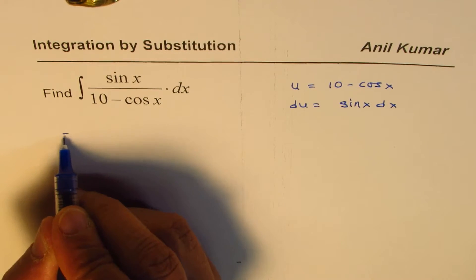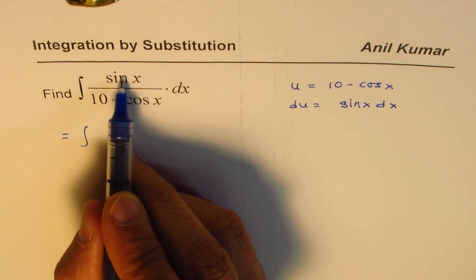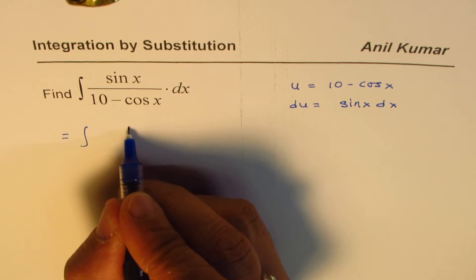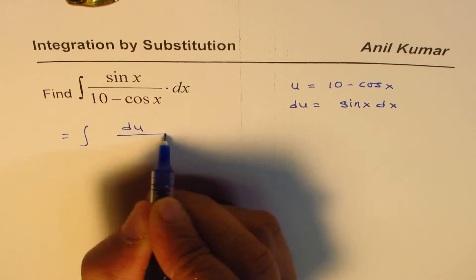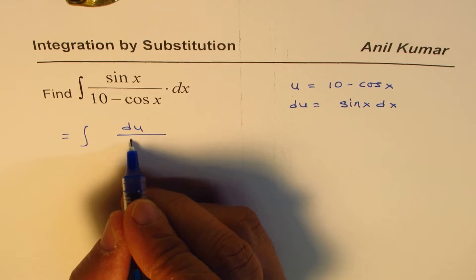So we can write this integral as sin x dx, which can now be written as du, and the denominator is u for us.